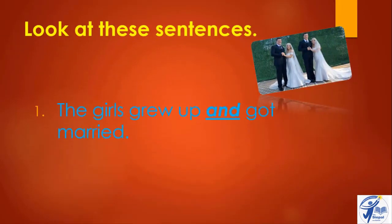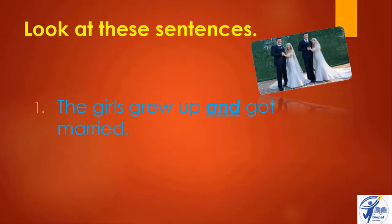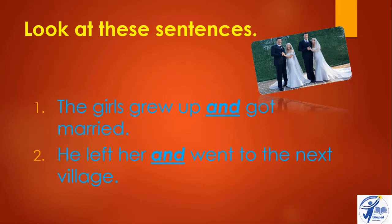Students, look at these sentences. The first sentence is: 'The girls grew up and got married.' The second sentence is: 'He left her and ran through the next word.' In both sentences you can see the word 'and', which is written in between the two sentences.